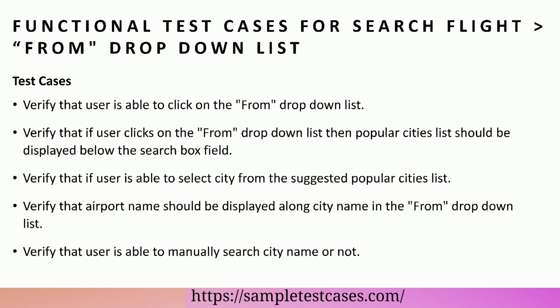Functional test cases for search flight from drop-down list. Verify that user is able to click on the from drop-down list. Verify that if user clicks on the from drop-down list then popular cities list should be displayed below the search box field. Verify that user is able to select city from the suggested popular cities list. Verify that airport name should be displayed along with city name in the from drop-down list.